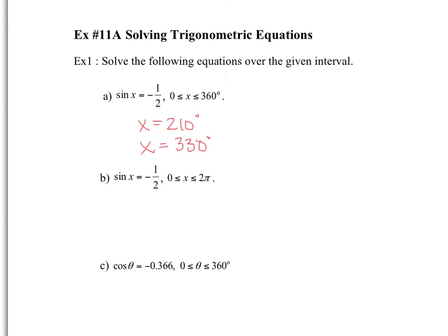The exact same thing happens over here, except here we're asking this question in radians. No calculator is necessary because this is an exact value. So you can simply state, looking at your unit circle or knowing these values without that, that x is equal to 7π over 6, and x is equal to 11π over 6, which are the radian values of those degrees.